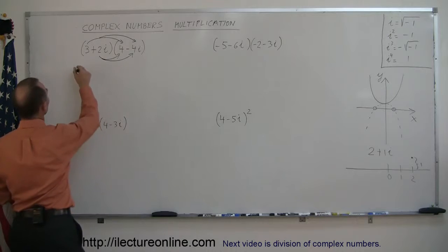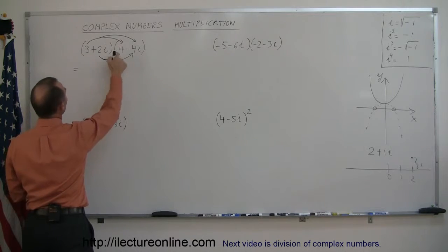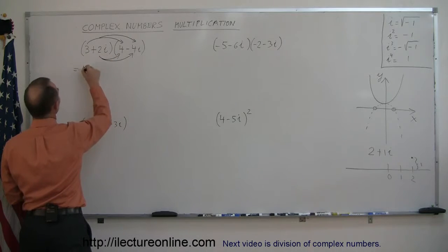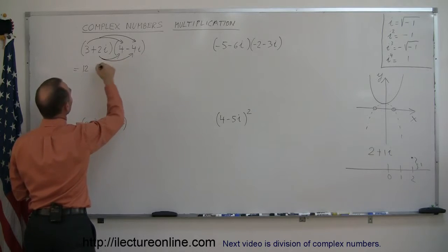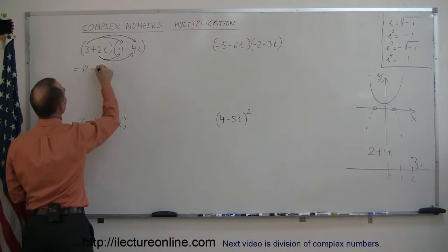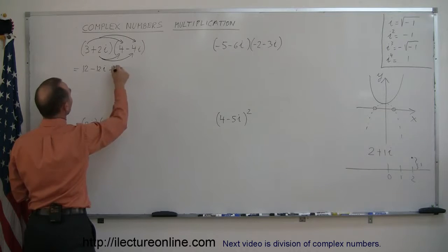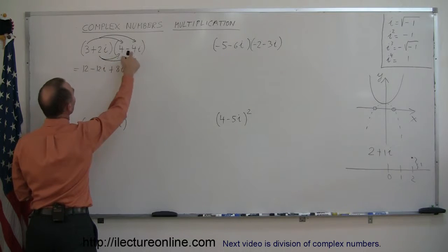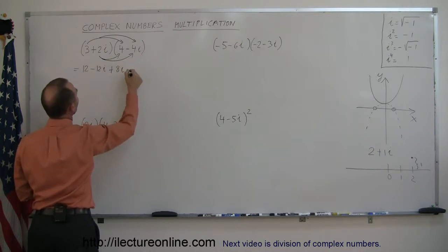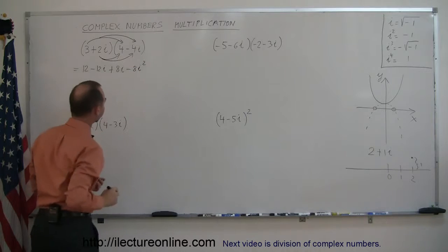In order to do that, you say this is equal to 3 times 4, which is 12, plus 3 times negative 4i, that's negative 12i, then 2i times 4, that's plus 8i, and 2i times negative 4i is negative 8i squared.